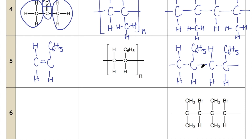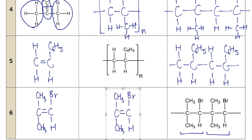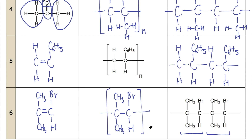The same approach applies for question six. You notice that the structure repeats twice, so there are two repeating units. Take that repeating part, add in the double bond, and that gives us the structure of the monomer. For the polymer, apply the same rule — remove the double bond, add the lines, and add brackets with n.